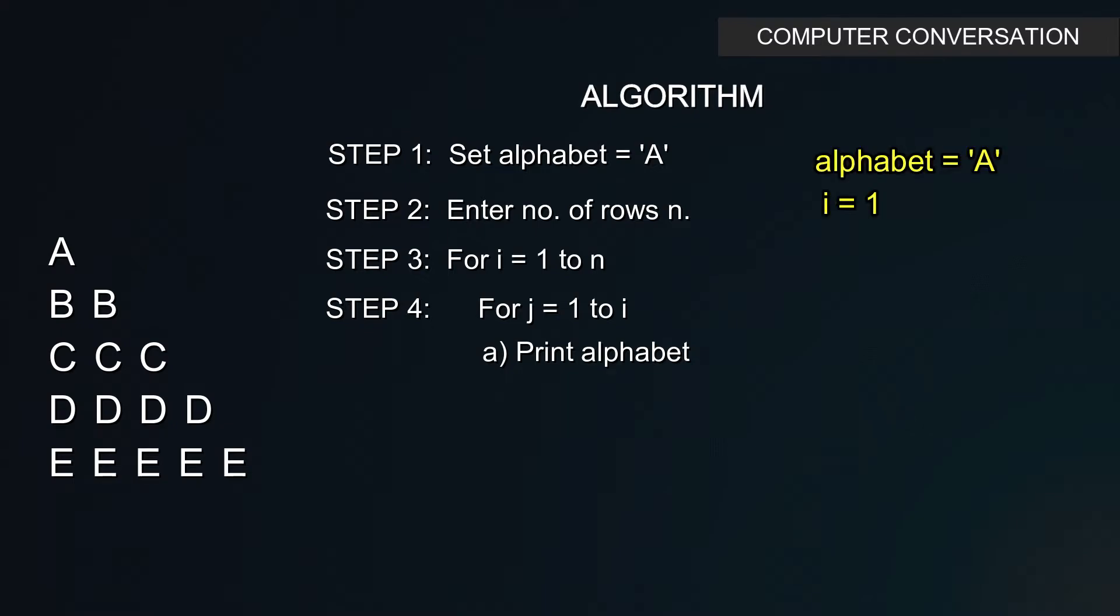So in the first iteration of i, j will run one time and therefore print A. Then outside the inner loop, we will update the alphabet value with the next value. So in the next iteration of i, i value will be 2 and then the inner loop of j will run two times.